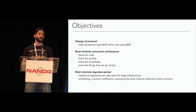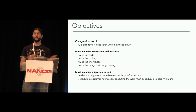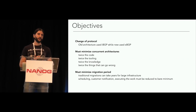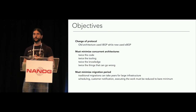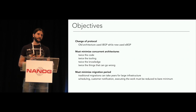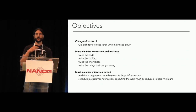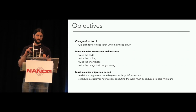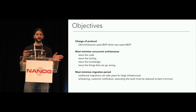We have a set of objectives for the migration. The first is to migrate from iBGP to eBGP — iBGP was used in the old control plane, eBGP in the new one. The main objective was to avoid running multiple control planes simultaneously, because that means maintaining twice the code, twice the tooling, training people to operate multiple different networks, and having twice the things that can fail. Finally, we wanted to make sure this migration wouldn't take years — migrating 40 to 50 PoPs, finding resources, notifying customers, scheduling maintenance windows can take forever.